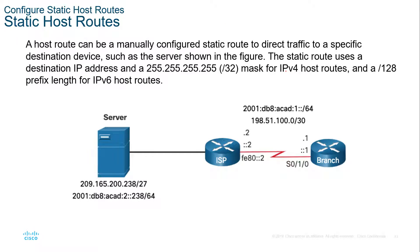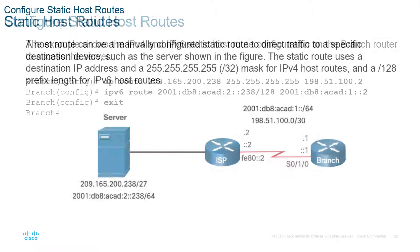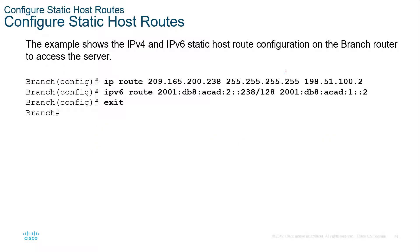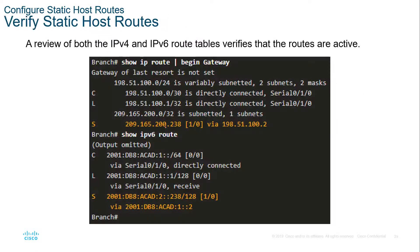Static host routes allow us to map specific addresses with a slash 32 if it's IPv4, or slash 128 if it's IPv6. Here is an example of a static host route. If we want to get to a specific address, we would list the address and do a slash 32, then send it to the next hop or the exit interface. That way, if we are sending something to 209.165.200.2 for example, this route would only match that specific host and nothing else.